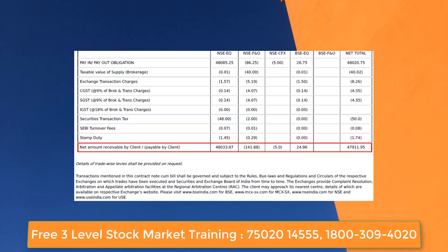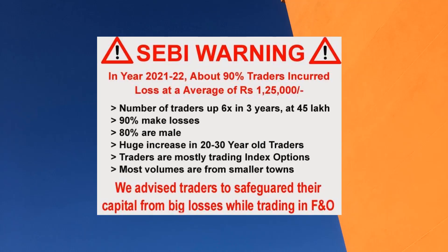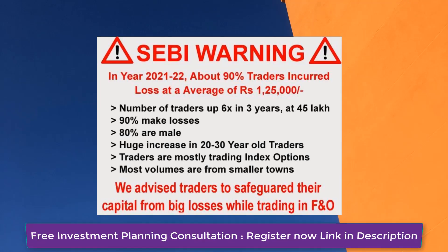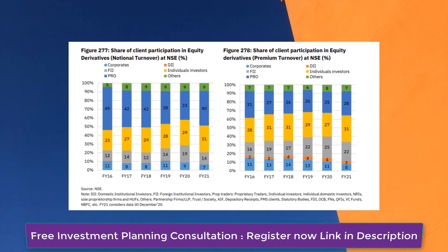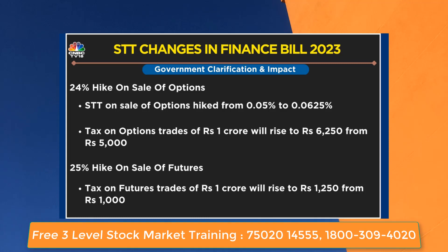All charges are documented with the broker and when we open our accounts we sign on all these obligatory and statutory charges. However, when we trade, most of us do not check the contract note nor are interested to know what charges have been levied. As per SEBI, 90 percent of traders lose money in the stock market and only 10 percent make profit consistently. Participation in the derivatives segment has increased manifold in the last five years. In the Finance Bill 2023, which was passed by the Lok Sabha, the Finance Minister hiked STT by 25 percent on sale of F&O contracts.